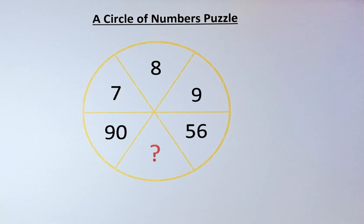The numbers in the circles are as follows: 90, 7, 8, 9, 56, and the question mark. What number does the question mark represent?